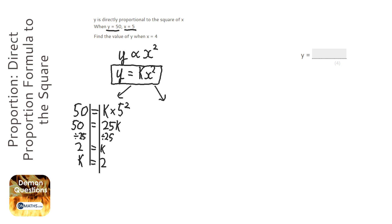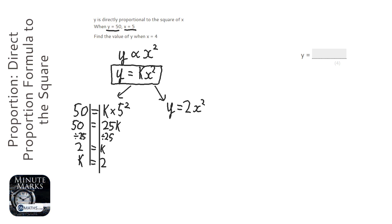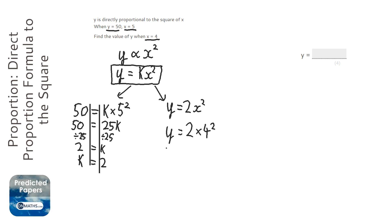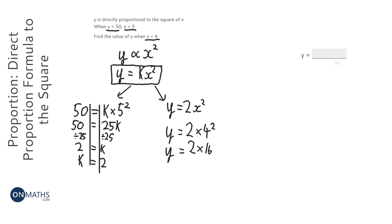So we're back to our formula, and we know that y equals 2x squared. k is constant — it won't change, so if it's 2 for that situation, it's going to be 2 across the board. It says find the value of y when x is 4, so we substitute 4: y equals 2 times 4 squared, which is 2 times 16, so y equals 32.